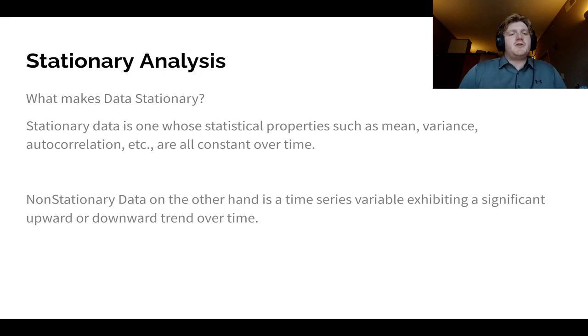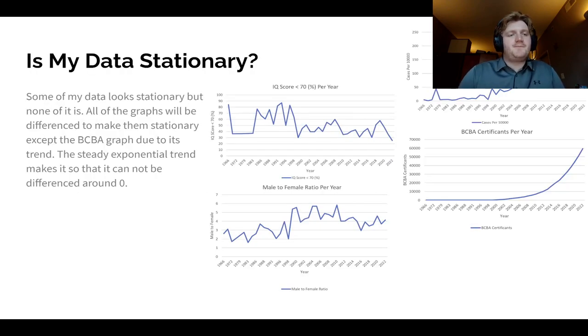So here is our stationary analysis. What makes data stationary? Stationary data is one whose statistical properties, such as mean, variance, and autocorrelation, are all constant over time. Non-stationary data, on the other hand, is a time series variable exhibiting a significant upward or downward trend over time. Is my data stationary? Some of my data looks stationary, but none of it is. All of the graphs will be different to make them stationary, except for the BCBA graph due to its trend. This is only because the steady exponential trend makes it so that it cannot be differenced around zero.